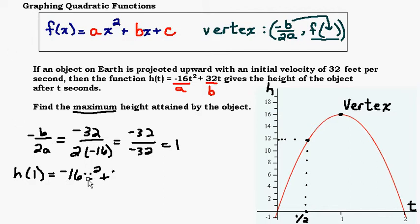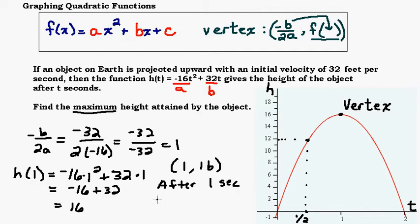Let's plug in a 1. Negative 16 times 1² plus 32 times 1 is going to give us -16 + 32, which is 16. So from this information, the vertex (1, 16) tells us that after 1 second, the object is going to reach its max height of 16 feet.